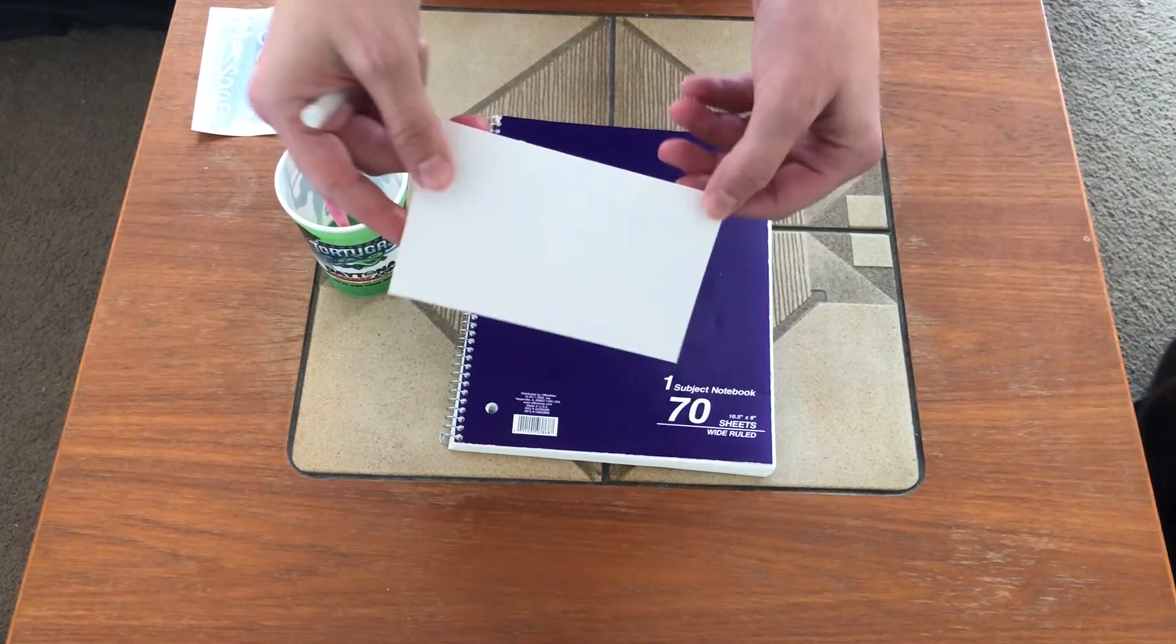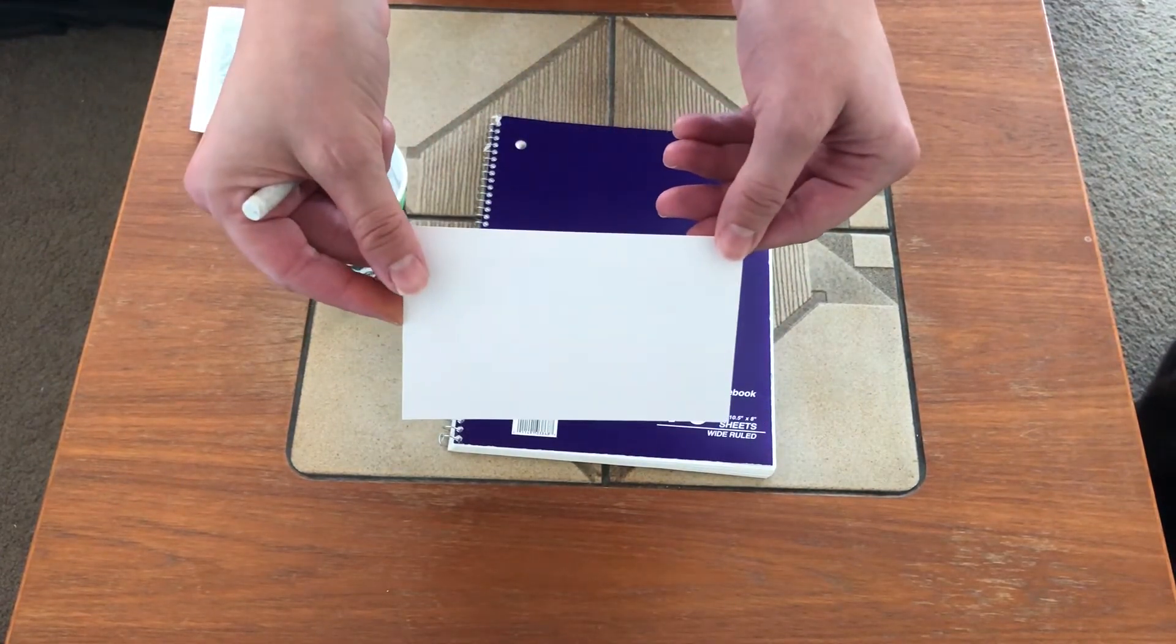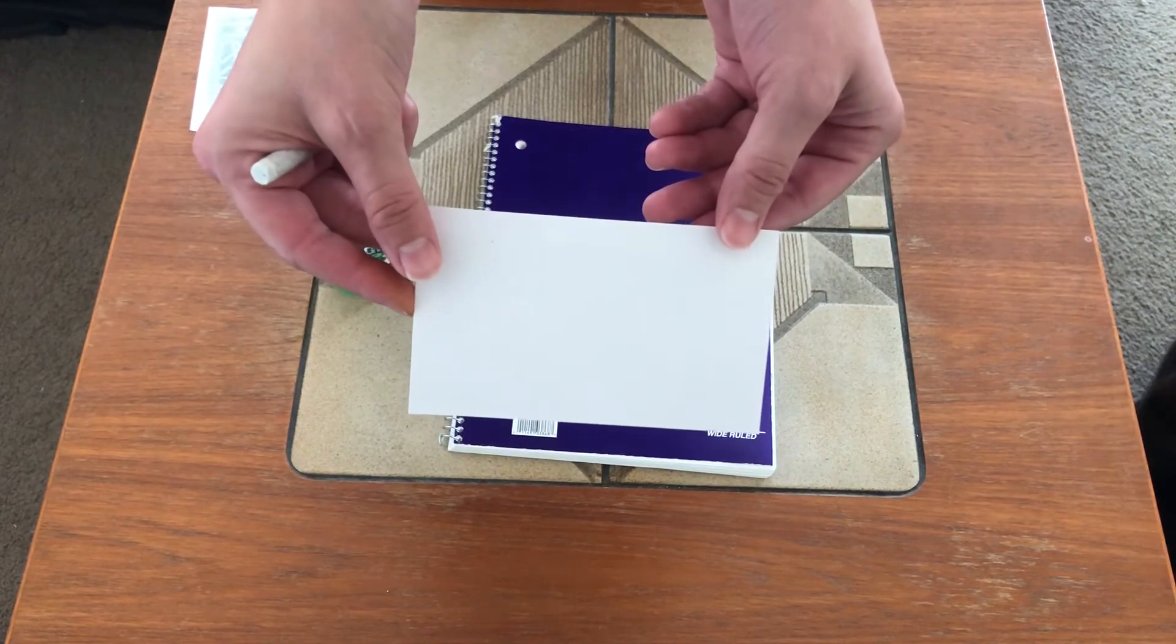So as you can see you cannot see what is on my paper, but now we're going to use the paint to show what was written on here.